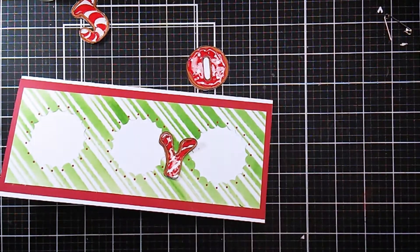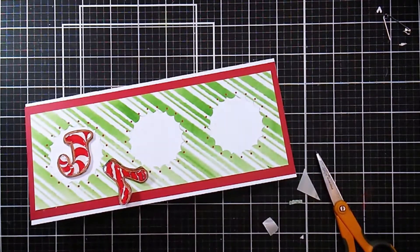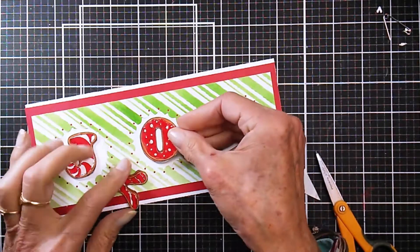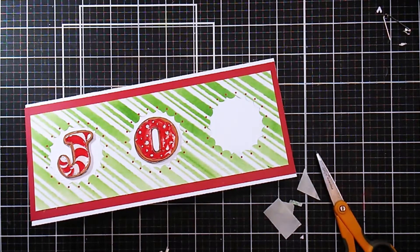Next I'm going to put foam dots on the back of all the letters to pop them up and give them a little bit of dimension. You see me just removing the backing paper and attaching them onto the front of the card.